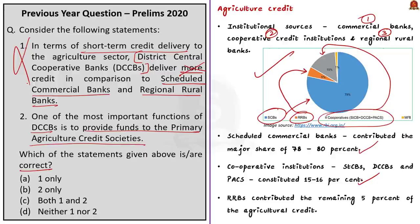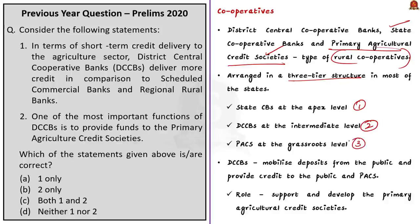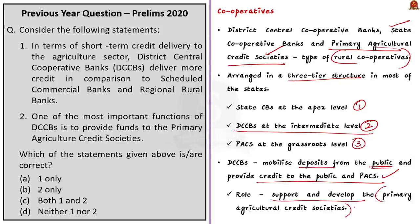Now consider Statement 2. District central cooperative banks (DCCBs) are a type of rural cooperative along with state cooperative banks and primary agriculture credit societies. Short-term cooperatives are arranged in a three-tier structure: state cooperative banks at the apex level, DCCBs at the intermediate level, and primary agriculture credit societies at the grassroots level. DCCBs mobilize deposits from the public and provide credit to the public as well as to primary agriculture credit societies. One of their most significant roles is to support and develop primary agriculture credit societies. Hence Statement 2 is correct.